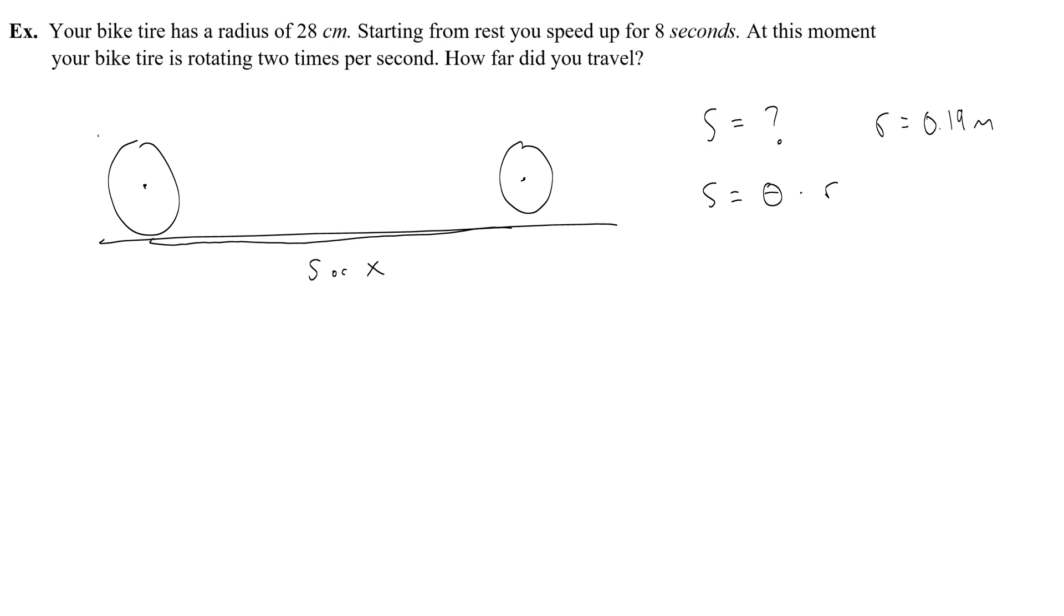And we know that you start from rest, so your initial angular velocity, you'd call that omega i, is 0 radians per second. And your final is 2 times per second. So I'm going to write it like this: 2 revolutions per 1 second, because it means you're rotating 2 times. We have to of course get that to radians per second, so to do that I'm going to put 1 revolution on bottom, 2 pi radians on top. And this tells me that I'm going to have 4 pi radians per second as my final angular velocity.